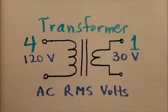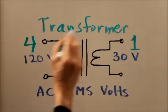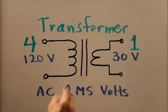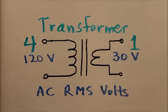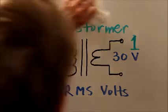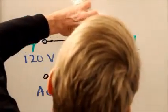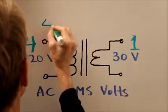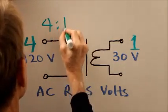Four turns here for every turn there, that is the primary to secondary turns ratio. The input is the primary winding, the output is the secondary winding, so the primary to secondary turns ratio here is four to one.